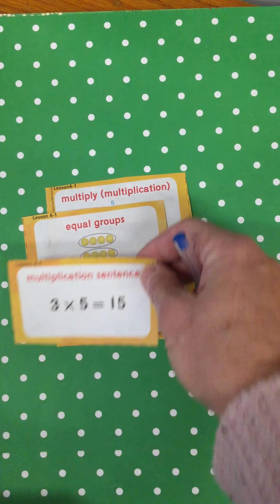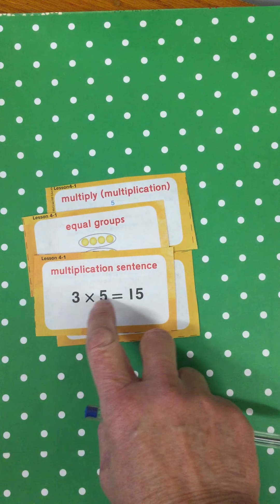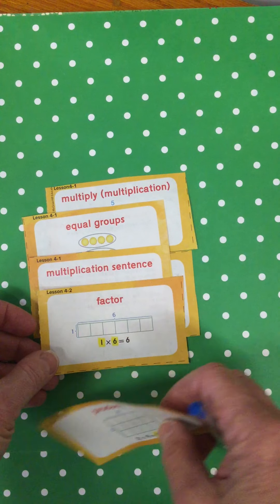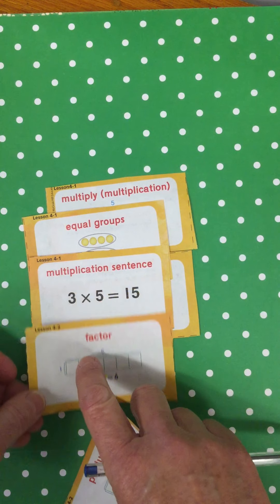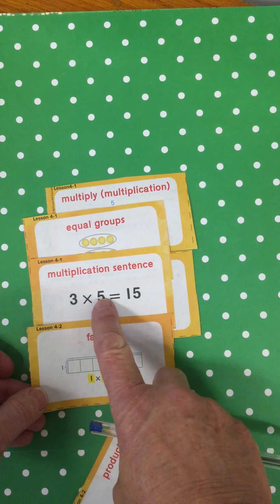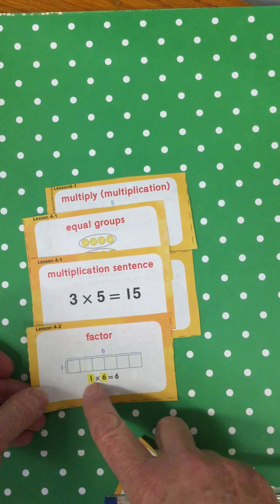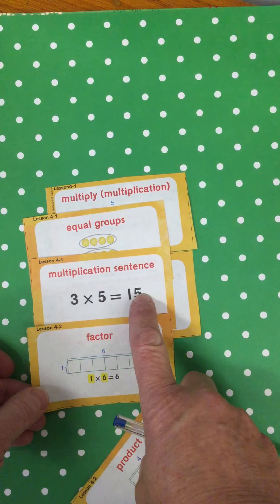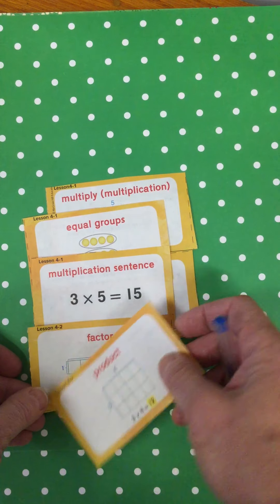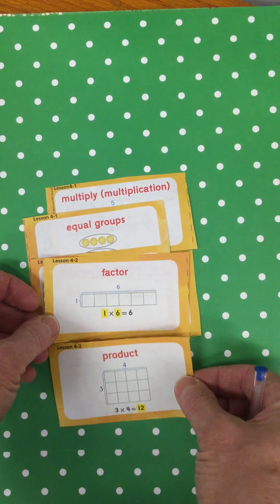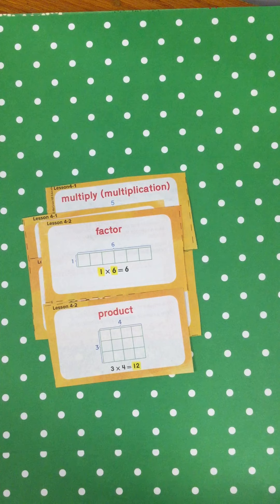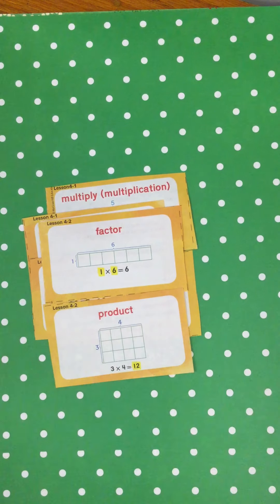You're going to see a multiplication sentence, two numbers that come up with an answer. And what are those terms or vocabulary? Factors. Factor times a factor equals a product. So 1 times 6 equals a product. 3 times 5 equals the product. So factor, factor equals product. Those are terms in multiplication.